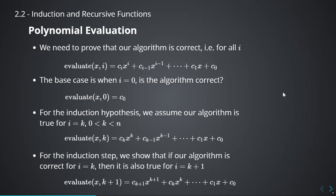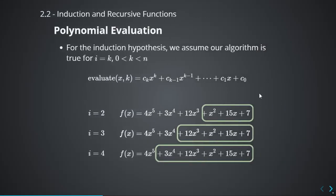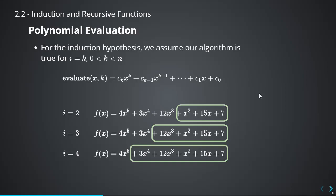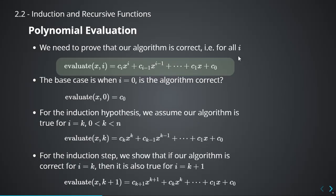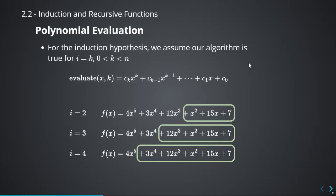We're also going to use induction to show that a second piece of code is correct. Specifically, we're going to show that a particular statement is always true for different values of i. We're going to do the same thing: start from i equal to 0, show the base case is correct, pick an induction hypothesis, and then show that if it's correct for i equal to k, then the algorithm is also correct for i equal to k plus 1. The algorithm computes polynomial terms from the back — if you give i equal to 0, you get just the constant term; i equal to 2 gives the last three terms; i equal to 4 gives the final five terms.